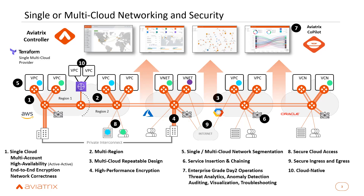Sixth is service insertion and chaining. If you want to deploy a firewall or any device through which you want service chaining enabled — like F5 or Palo Alto — inserting those devices is possible. Seventh is for day-two operations and visibility: threat analytics and troubleshooting are available through CoPilot.